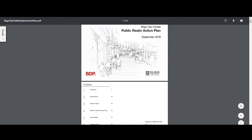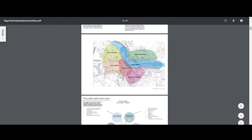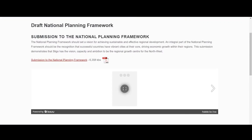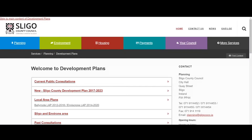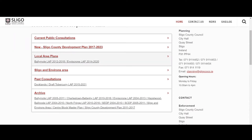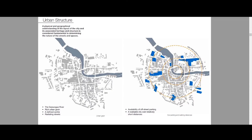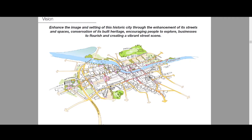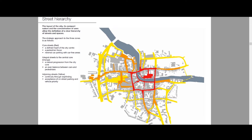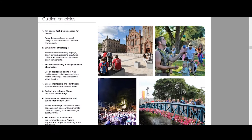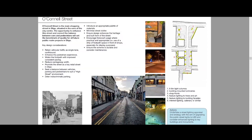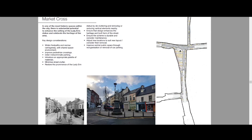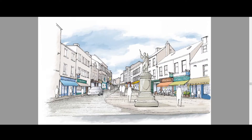A really interesting way to analyse your site is to look at existing development proposals, and these are usually found on your county council website in the planning section. Every county has a county development plan and usually the major towns have their own separate mini plans within them. These are invaluable sources of information and can also inform your design by showing you what plans have already been proposed and how your site fits into them. They help add a sense of reality to your projects, and they're also a good source of diagrams and maps that you can trace over.